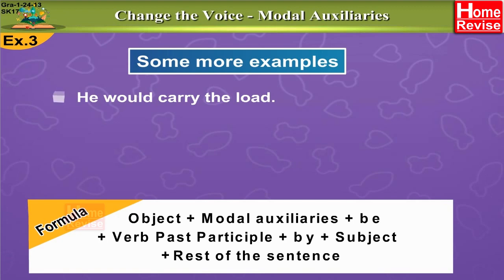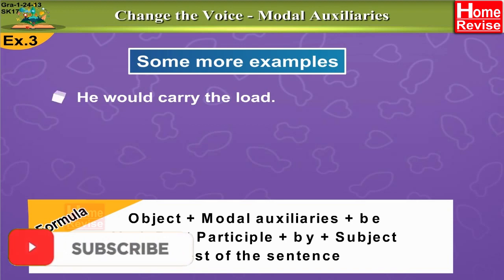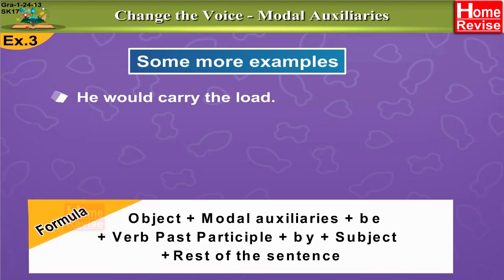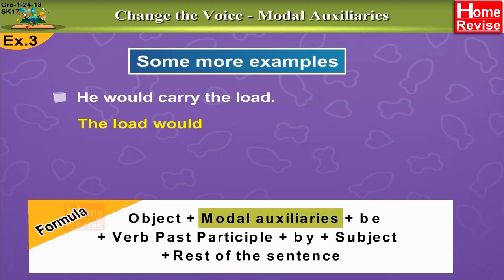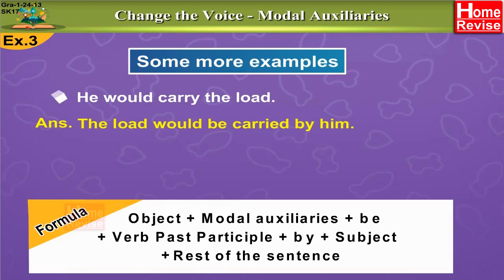Let's take another example. 'He would carry the load.' What would he carry? — The load. So 'the load' is the object. Remember, to identify a direct object, always ask a question beginning with 'what' — whatever answer you get is the object. So beginning with the object: 'The load,' followed by the modal auxiliary 'would,' then 'be,' and the past participle of 'carry' is 'carried,' by 'him.' The answer is: The load would be carried by him.